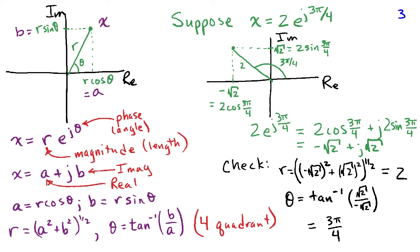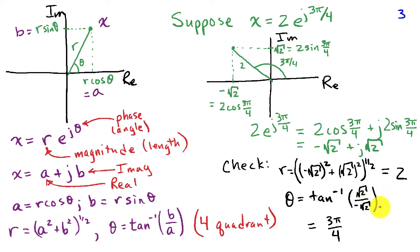We can verify by going from rectangular back to polar. Checking the magnitude r: negative square root of 2 squared is 2, plus square root of 2 squared is 2, the sum is 4, and the square root is 2. Taking the four-quadrant arctangent of square root of 2 divided by negative square root of 2 gives a ratio of negative 1, which corresponds to an angle of 3pi over 4 — confirming our original polar form.